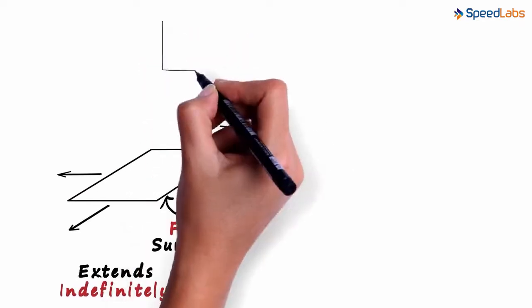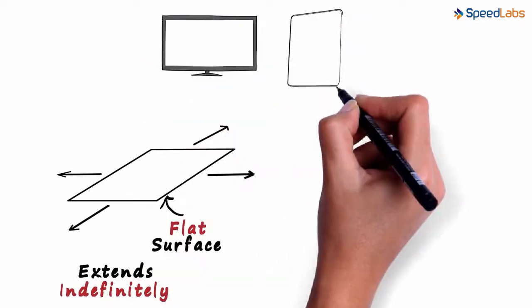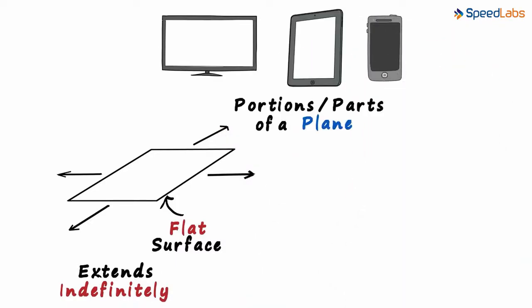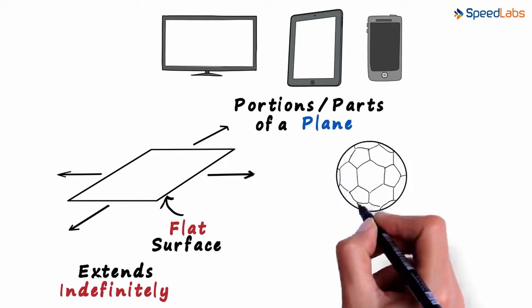A flat screen television, a tablet or a mobile phone are all examples of portions or parts of a plane. This football on the other hand is not a plane surface.